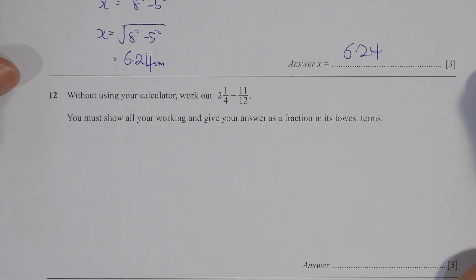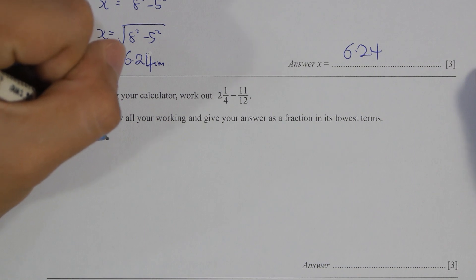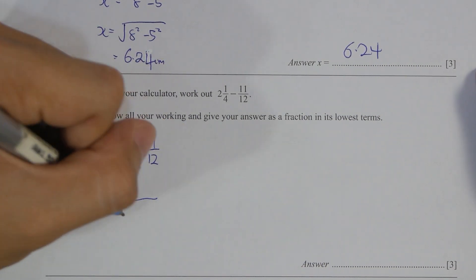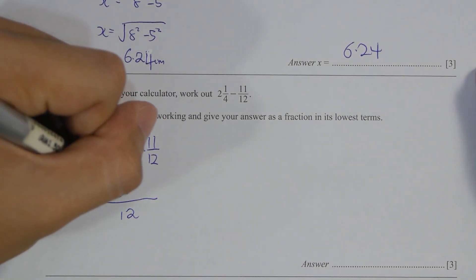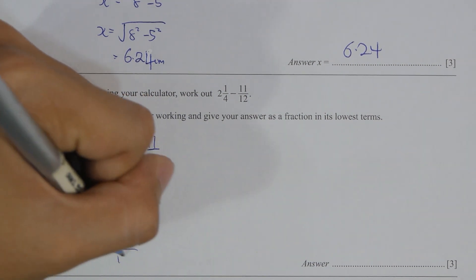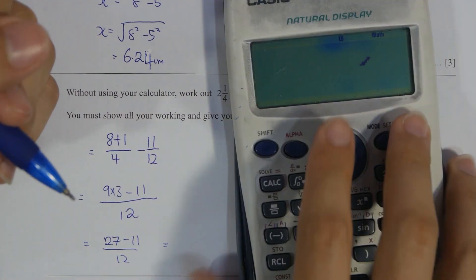Question 12, key things here is to change the proper fraction into improper ones first, then convert their denominator into the same as 12. So after you run the calculation, you get 4 over 3, and 4 over 3 value is actually equivalent to 1 and 1 over 3.